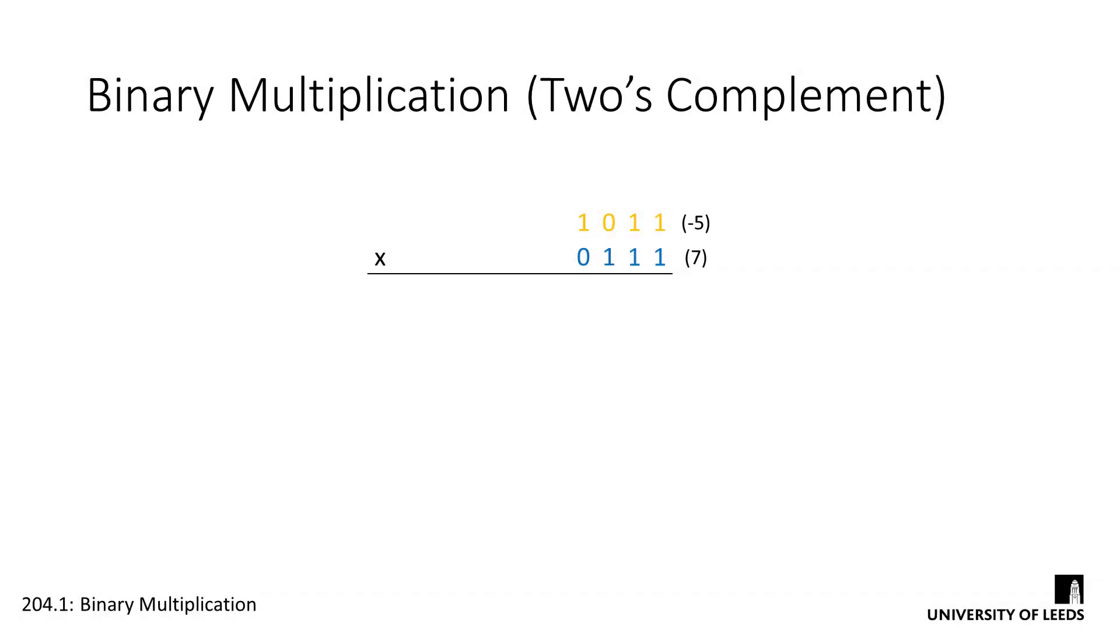So we've established how we can multiply unsigned binary numbers. So let's try following the same concept for signed binary and 2's complement. We'll generate our partial products, and then add up the columns to get the results. So in this example,